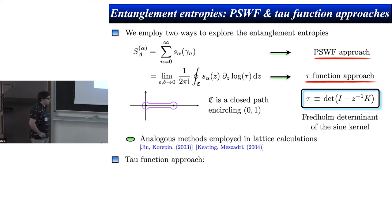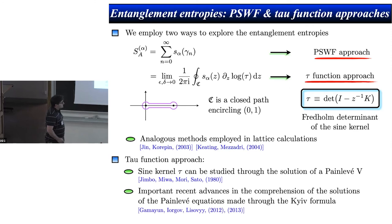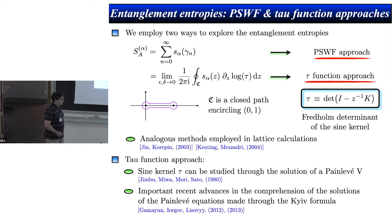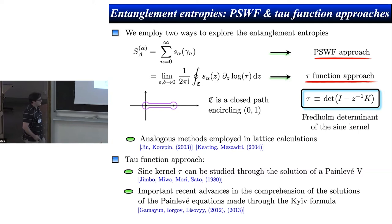The Fredholm determinant of the sine kernel is well-studied in the mathematical literature. It is known that it can be studied through Painlevé V equations, known since the 1980s. More recently, there has been an interesting development based on the Nekrasov partition function formula, related to instanton calculations and AGT. Gamayun, Iorgov, and Lisovyy ten years ago wrote a convenient expansion of this tau function for essentially all Painlevé equations. We are going to use this result to derive analytic results.